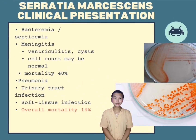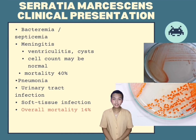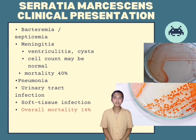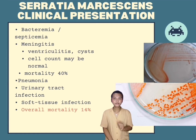Serratia marcescens clinical presentation — this is the list of possible diseases when you are affected by this bacteria. The first is bacteremia. The second is meningitis, such as ventriculitis or cysts, where cell count may be normal, and the mortality rate is 40%. Other conditions include pneumonia, urinary tract infection, and soft tissue infection, with an overall mortality of 14%.